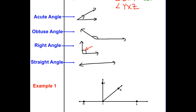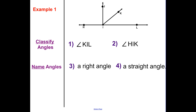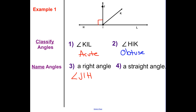Let's classify some angles. Angle KIL — looking at it, it's less than 90 degrees, so it's acute. Angle HIK is more than 90 degrees, so it is obtuse. A right angle is 90 degrees — we'll name this one angle JIH, though we could also name it JIL. A straight angle is that flat line — we'll name that angle HIL, or backwards LIH.